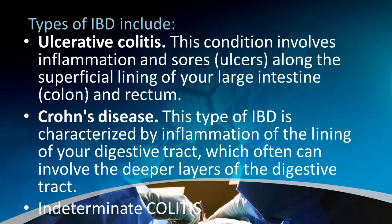Ulcerative colitis involves inflammation and sores along the superficial lining of your large intestine and rectum. Crohn's disease is characterized by inflammation of the lining of your digestive tract which often can involve the deeper layers. Indeterminate colitis is diagnosed when it is hard to distinguish between ulcerative colitis and Crohn's disease.